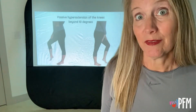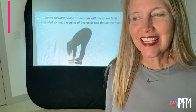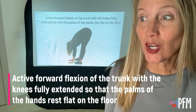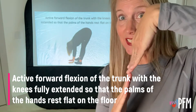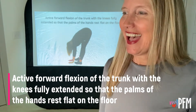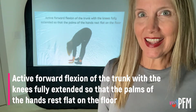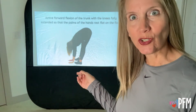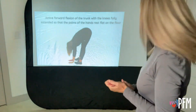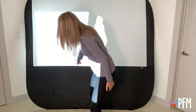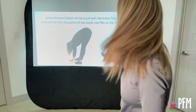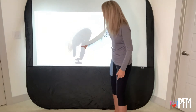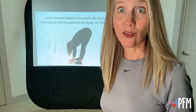The last test is active forward flexion of the trunk with the knees fully extended — they can't be bent — so that the palms of the hands rest flat on the floor. You can see in the picture that my knees are straight and my palms are flat on the ground. That is a positive test.